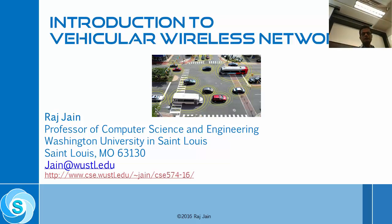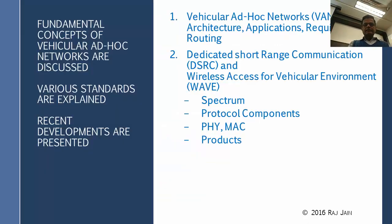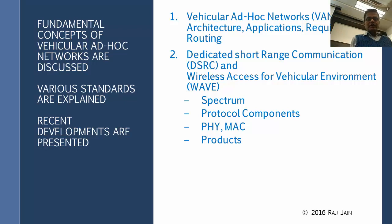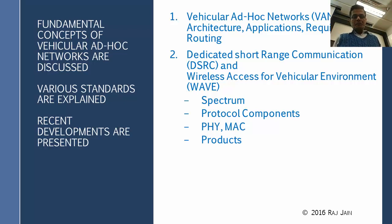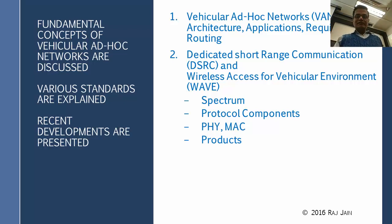We move on to the next module on Vehicular Wireless Networks. These are called Vehicular Ad Hoc Networks or VANET. We talk about the VANET architecture, application requirements, routing, and a standard called DSRC or WAVE — Dedicated Short Range Communication — also known as 802.11p, which will come up when we talk about DSRC.